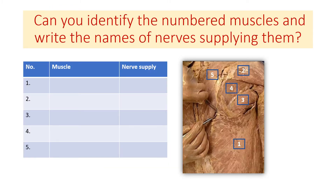Now keep trying whether you can identify the numbered muscles. Once you have identified them, write the names of the nerves that supply them. First identify the muscles, name those muscles, then write the nerves that are supplying these muscles. There are five muscles — you should be able to list them one to five and then mention their nerve supply.